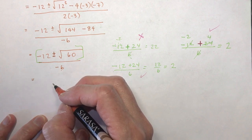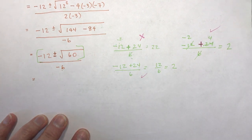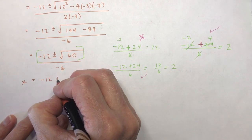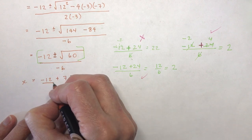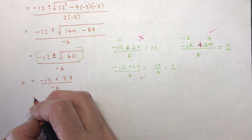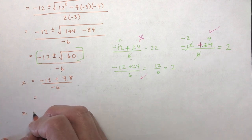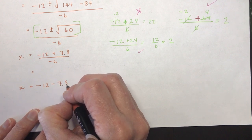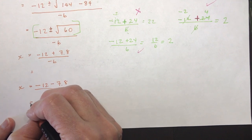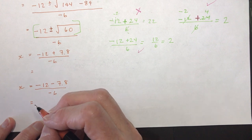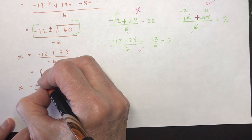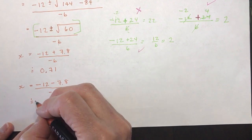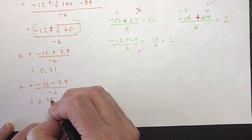The square root of 60 is approximately 7.8. So that gives x equals negative 12 plus 7.8 over negative 6 for one solution, and negative 12 minus 7.8 over negative 6 for the other. Those answers come out to approximately 0.71 and approximately 3.29.